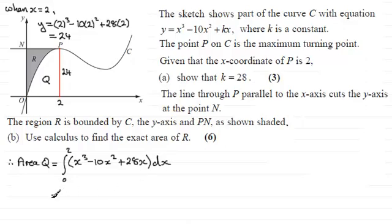And then in the usual way, for terms like these, we just add 1 to the power and divide by the new power. So for the first term, it's going to be x to the 4 divided by 4. Next term, second term in, it'll be minus 10x cubed and then divided by 3. And for 28x, it'll be 28x squared divided by 2.